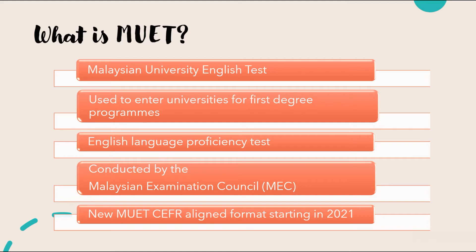Proficiency means the ability and the skill that you have for something. In this case, the MUET test is going to measure your ability and skill to use and to understand the language for the purpose of tertiary education — meaning it will test you on whether you are able to listen, speak, read and write in English in the context of higher education. You are required to have sat for MUET and have with you the MUET certificate during your application into the degree programs. This test is conducted by the Malaysian Examination Council, or Majlis Peperiksaan Malaysia (MPM) in BM.